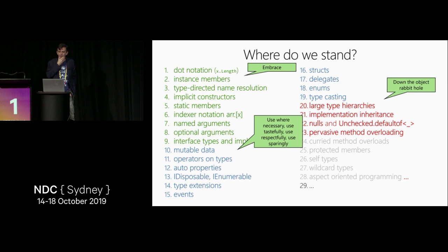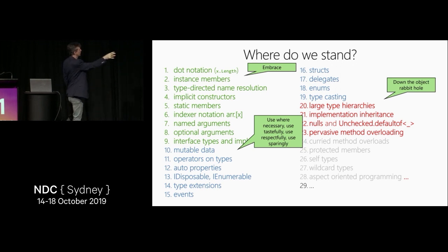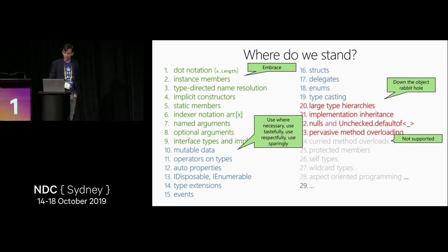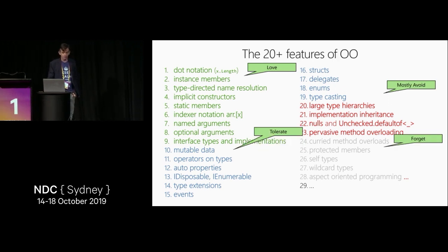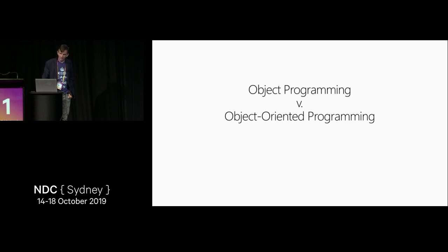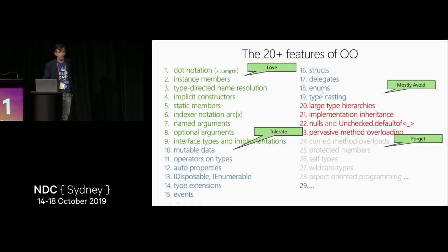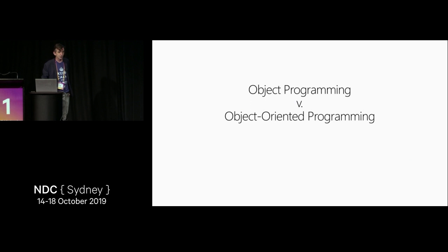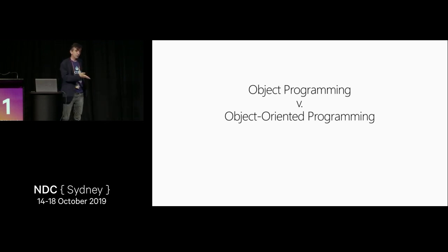There's also a set of things we don't support at all in F-sharp: curried method overloads, self-types, wildcard types, aspect-oriented programming. So roughly speaking: you love the first set, you tolerate the second set, you mostly avoid the third set, and you absolutely forget the fourth set. The difference is really between object programming and object-oriented programming. F-sharp absolutely supports object programming — that's a major part of the F-sharp methodology. But we don't really embrace object-oriented programming. We support object programming but also sequence programming, async programming — many different computational structures that flow together nicely.